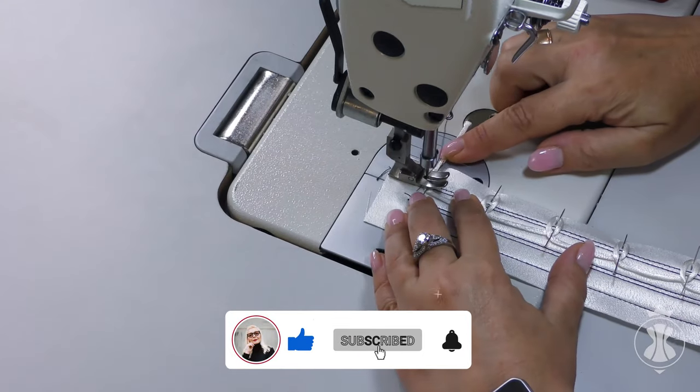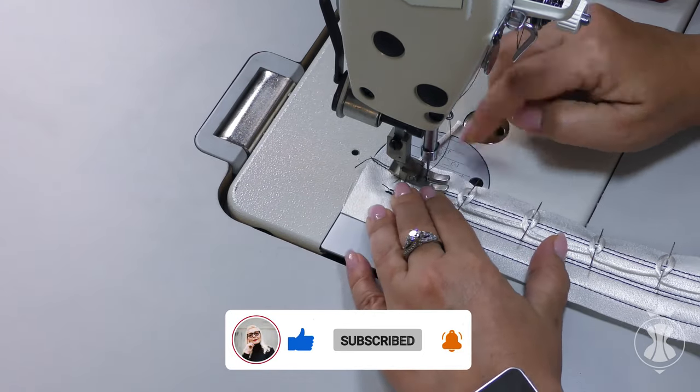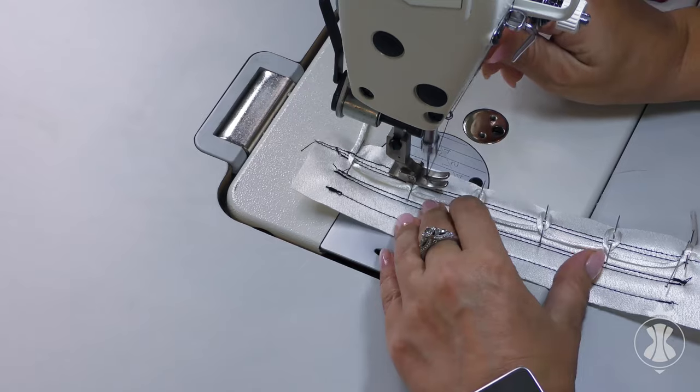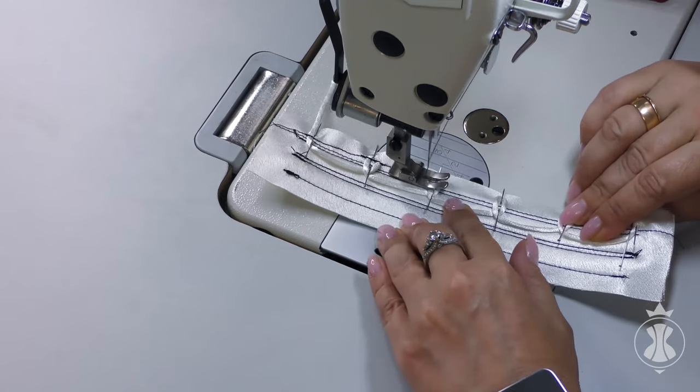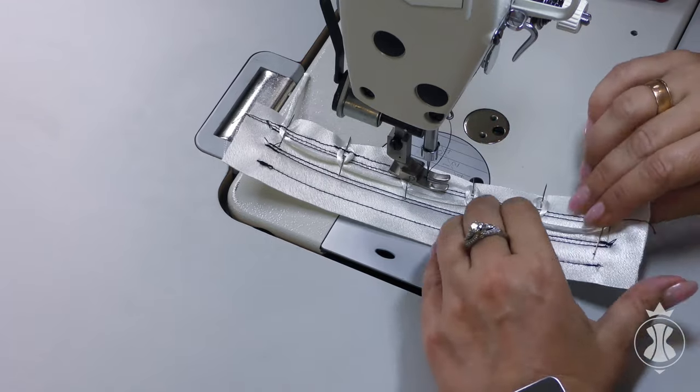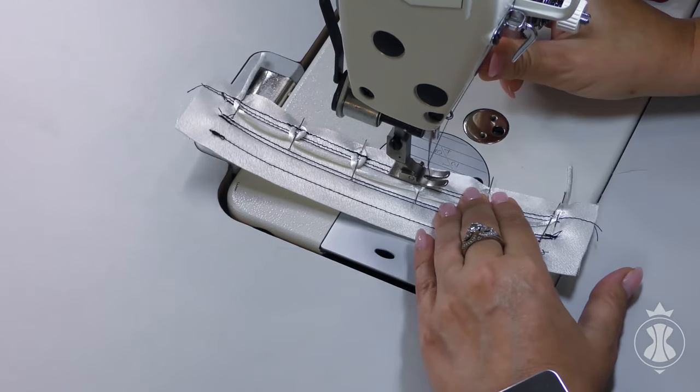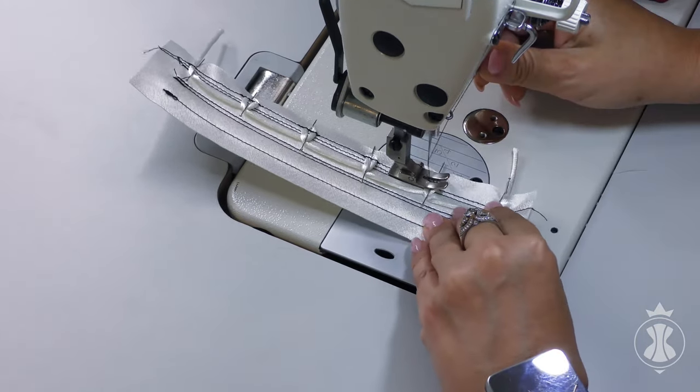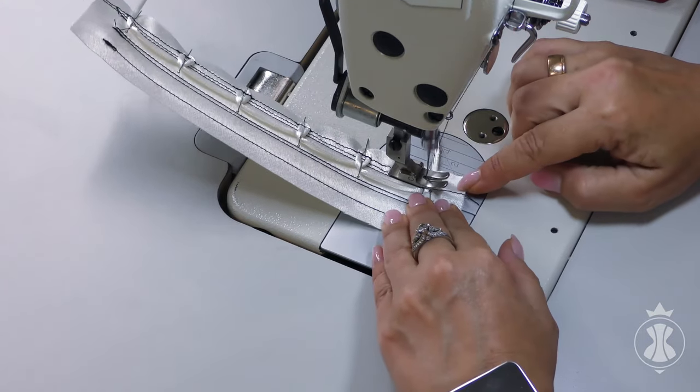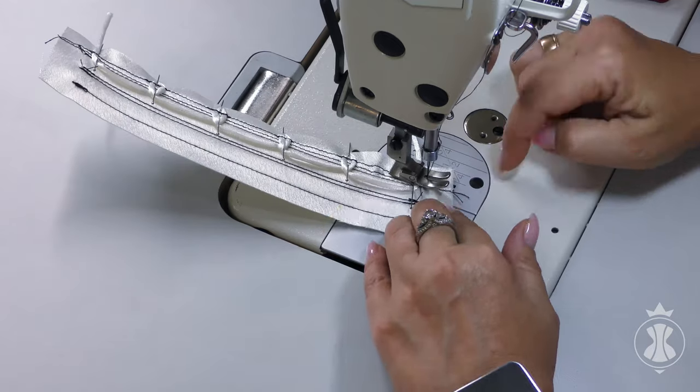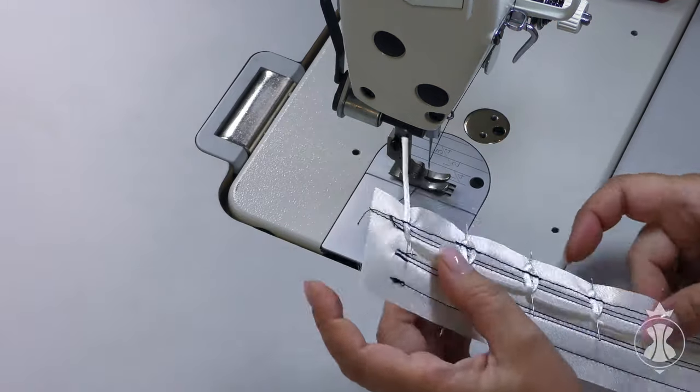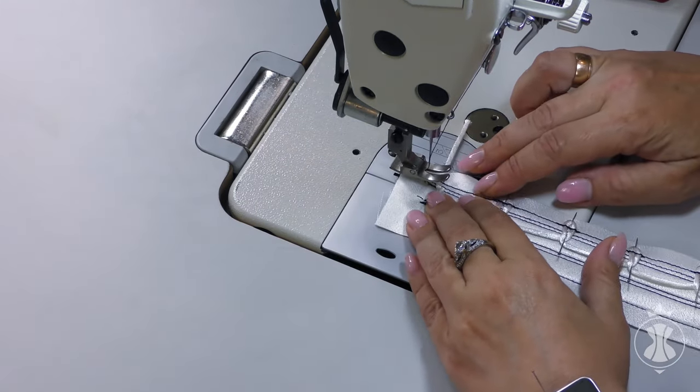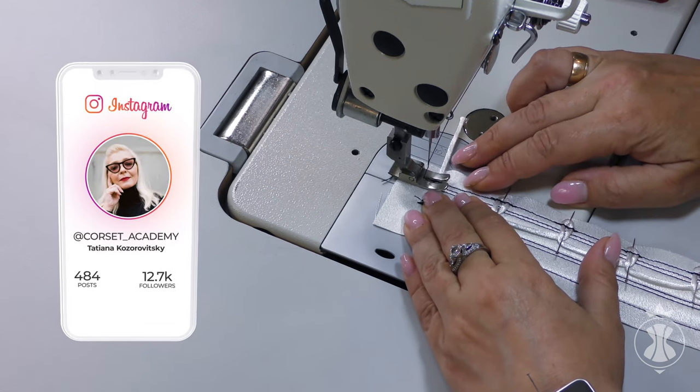I fix the loops with a stitching line in 1 millimeter from the stay stitching line toward seam allowance. Now I remove pins, distribute and level the loops, and carefully make an additional line.